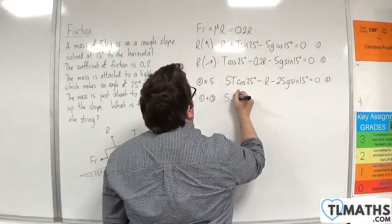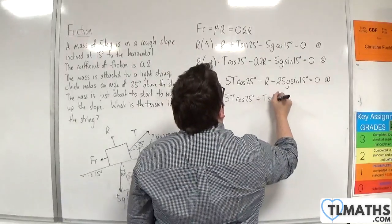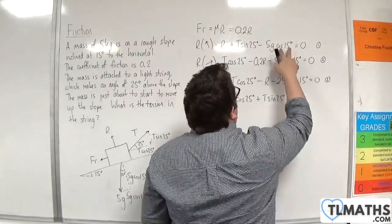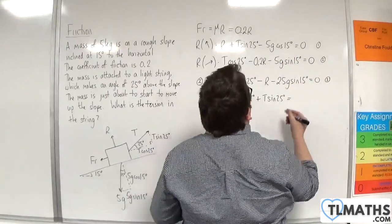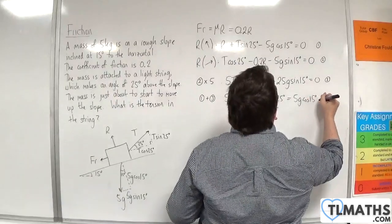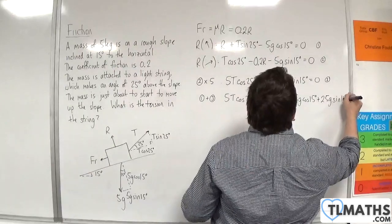And I'm going to have 5T cosine 25 degrees plus T sine 25 degrees, and I'm going to move the other two pieces over to the other side of the equation, so 5G cosine 15 degrees and 25G sine of 15 degrees.